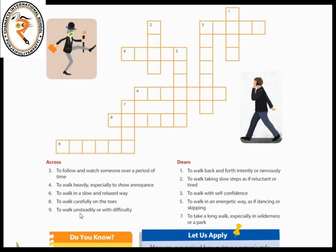The sixth clue is: to walk in a slow and relaxed way. You have to find what word it is. How many letters does the sixth one have? It is a 7-letter word.